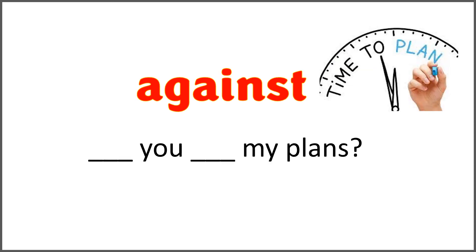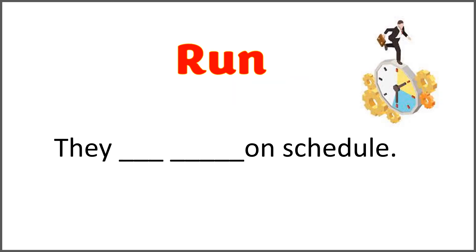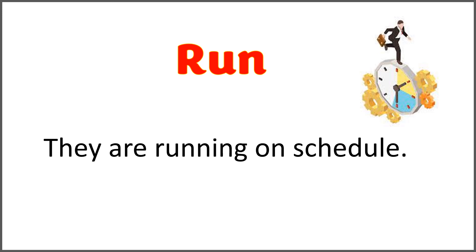The given word is 'against,' and the sentence is 'blank you blank my plans?' Use the word 'against' with 'are' to complete this sentence. Are you against my plans? No, I'm not — but what are your plans? The given word is 'run' and the sentence is 'they blank blank on schedule.' Use the correct form of 'run' with 'are.' They are running on schedule. That's good.